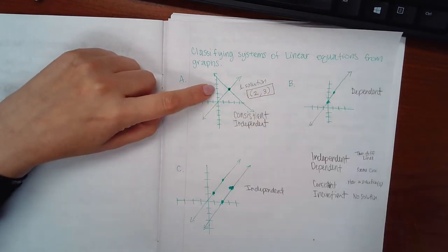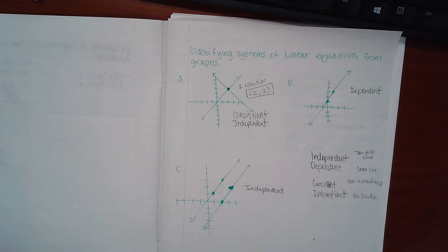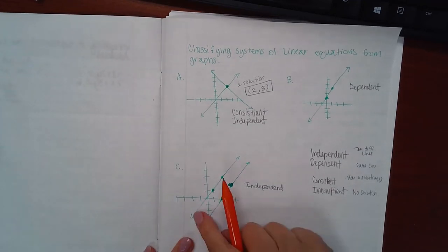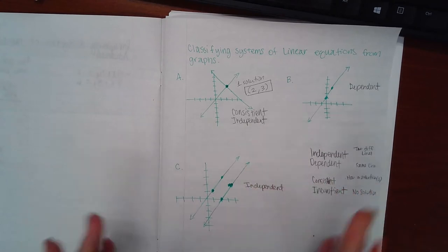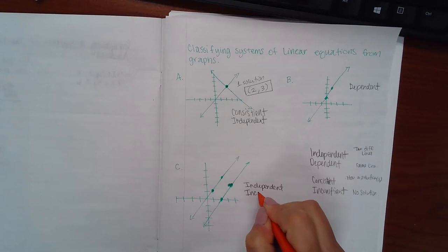Whereas here, you notice they never cross, they never touch. They're just running parallel to each other, so this one is called inconsistent and there is no solution here whatsoever. That's what inconsistent means.